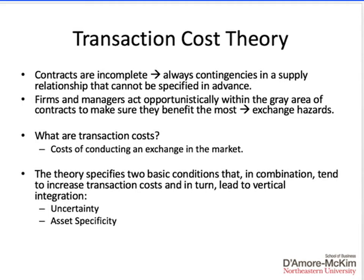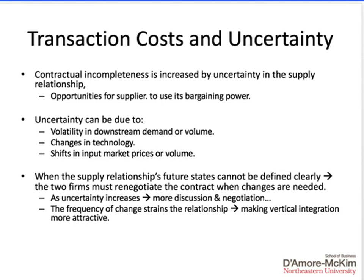Transaction cost theory specifies two conditions that, when they occur together, may increase transaction costs and lead to the need for vertical integration. In terms of uncertainty, the problems with incomplete contracts are exacerbated when there is uncertainty in the exchange relationship, providing more opportunities for the use of bargaining power. Uncertainty may be due to changes in demand, changes in technology, or changes in market prices of inputs. Each renegotiation opens the door for additional transaction costs as the firm has to protect itself from being taken advantage of.